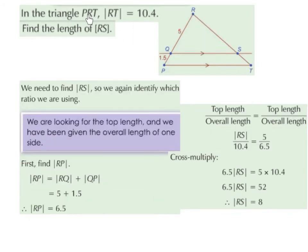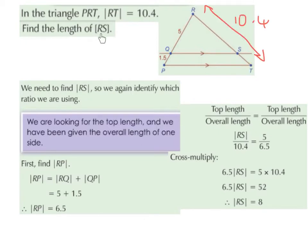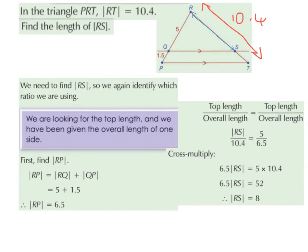In triangle PRT, the length of RT is equal to 10.4. We want to find the length of RS — from here to here, we're trying to figure out what RS is. I'm going to label RS as X, so I'm trying to find X, I'm trying to find RS.